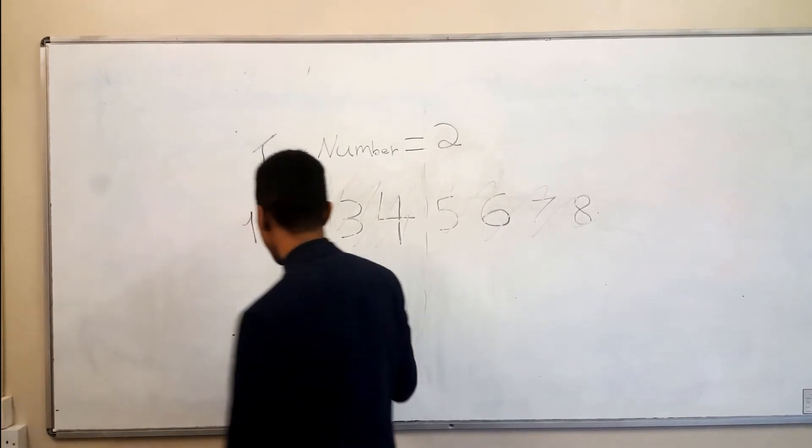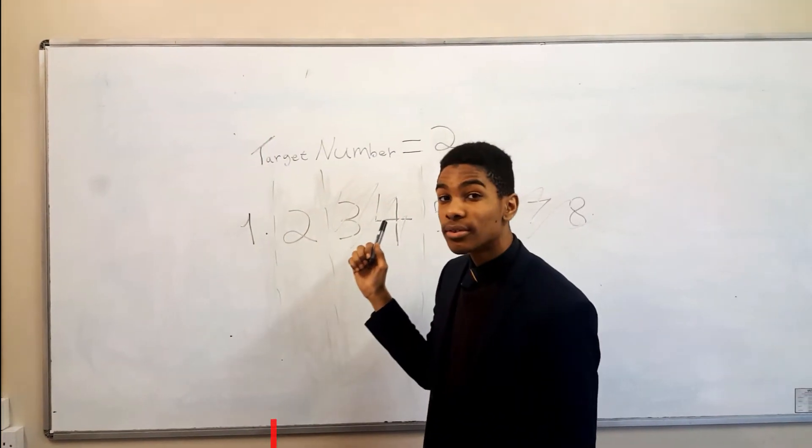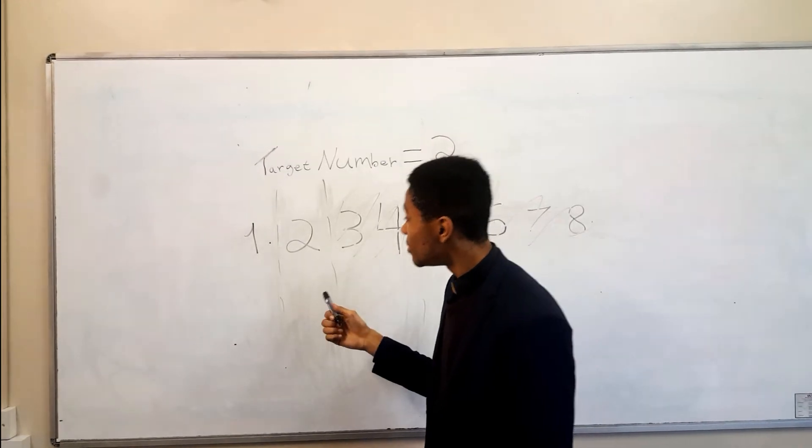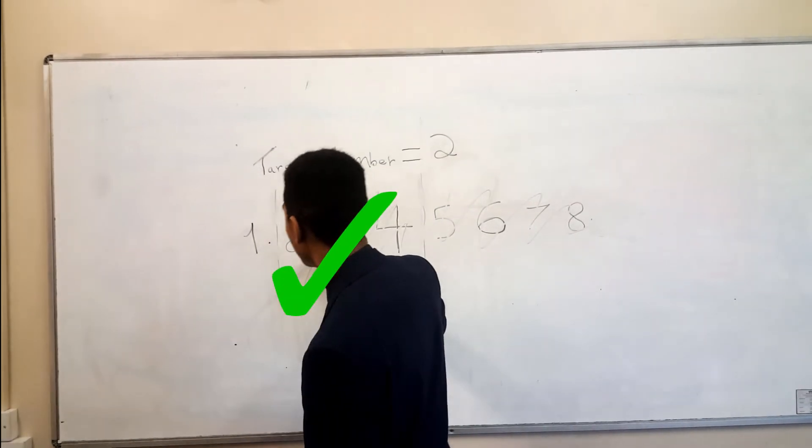We then split the list in half again. So 2 is equal to the value on the right. 2 is indeed equal to 2 and therefore we have found our value.